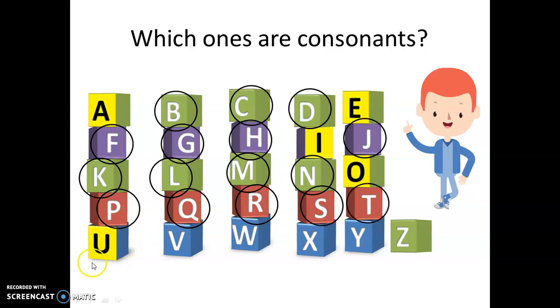U is? Vowel. That's right. V is consonant. W, consonant. X, consonant. Y, consonant. Z is consonant.